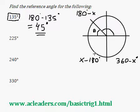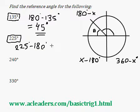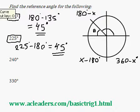Okay, so now 225 is on the third quadrant. So I'm going to have to use this little formula here. So 225 minus 180 this time will give me again 45 degrees. So the reference angle for 225 is also 45 degrees. And let's take a look why.